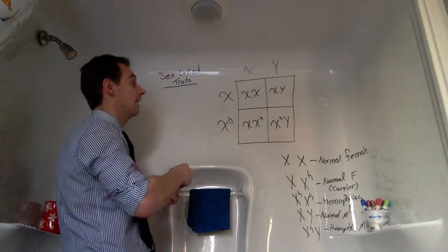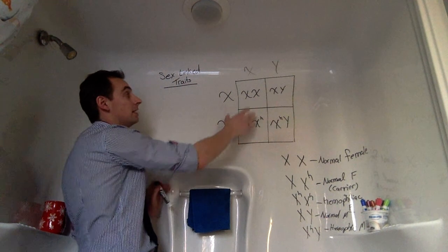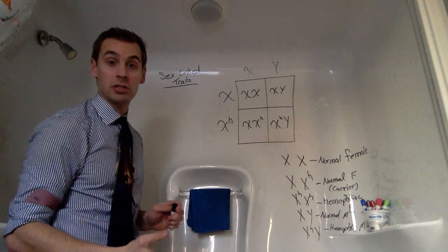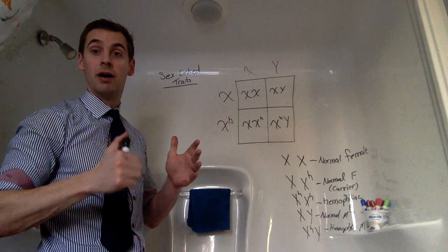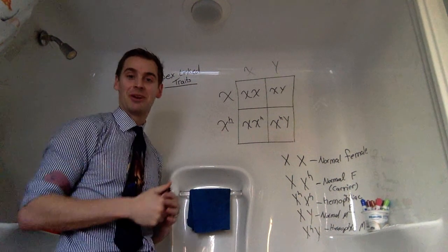So here's a quick example on how a sex-linked trait can appear on a Punnett square. So if you have any questions, feel free to reach out to me. If not, hope you learned something. Have a great day. Take care.